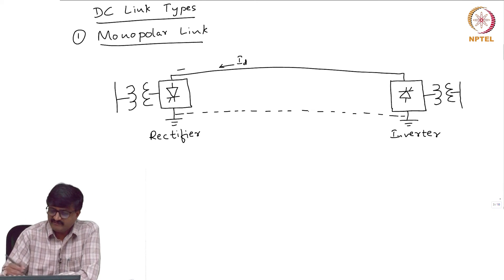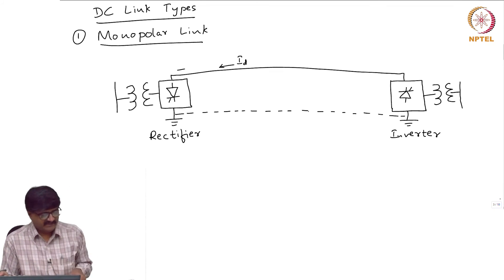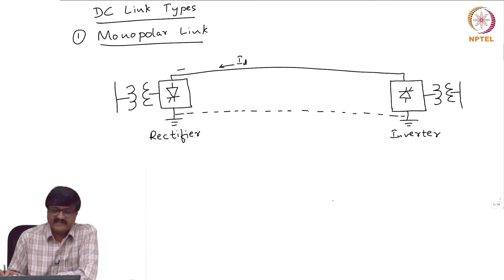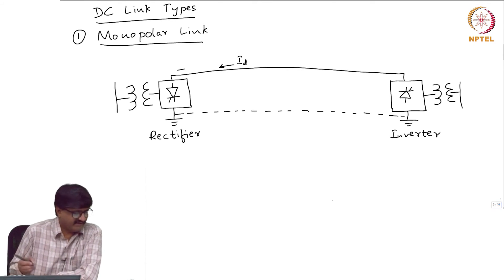Id is flowing in one of the conductors. So the other terminal which is positive terminal is actually the ground. So the current is getting completed only by flowing through the ground or water, in fact.